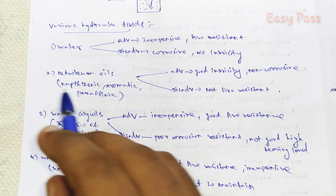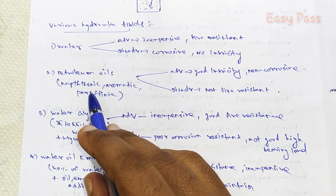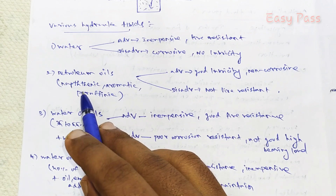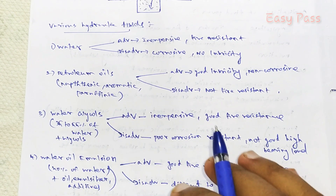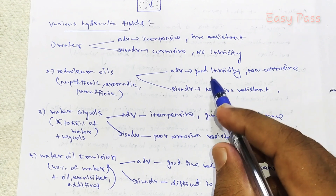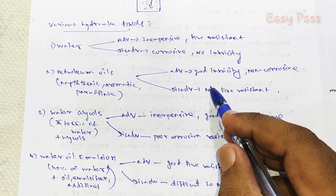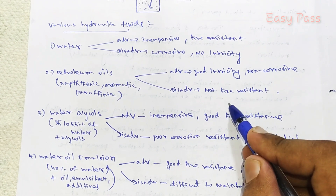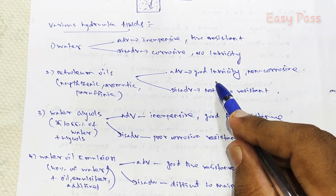Petroleum oil — crude oil. Crude oil is aromatic and paraffinic as a hydraulic fluid. Its advantages include good lubricity, non-corrosive, and high resistance. However, it is not fire resistant.